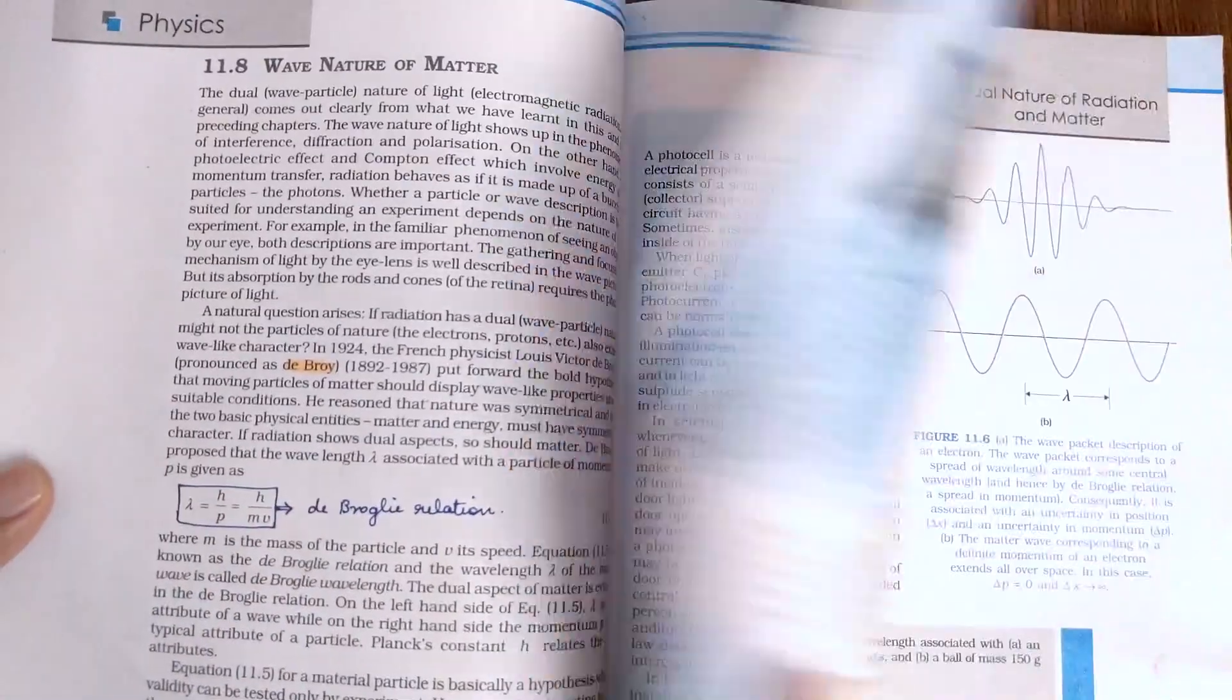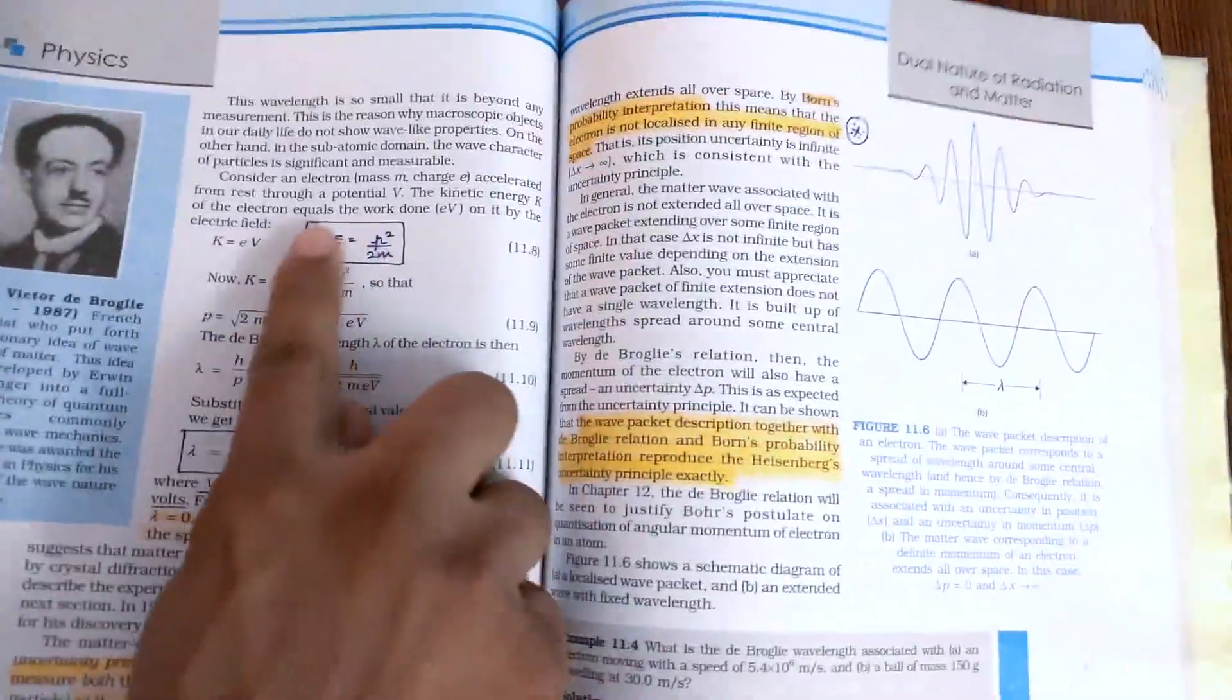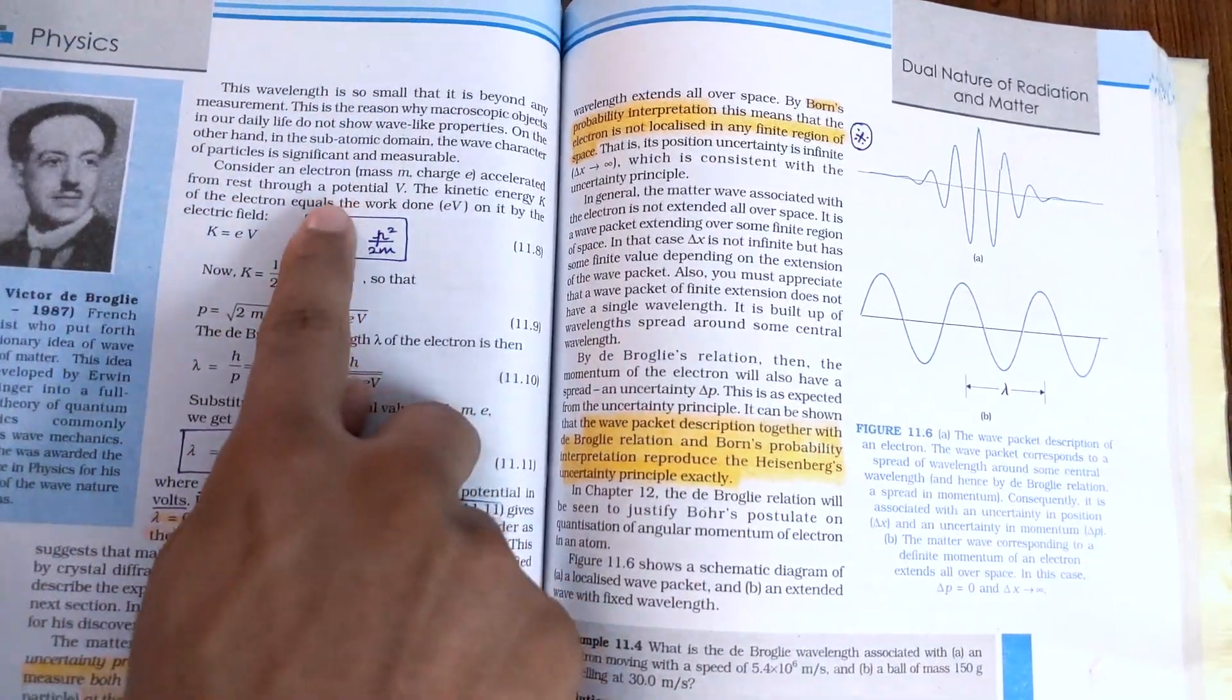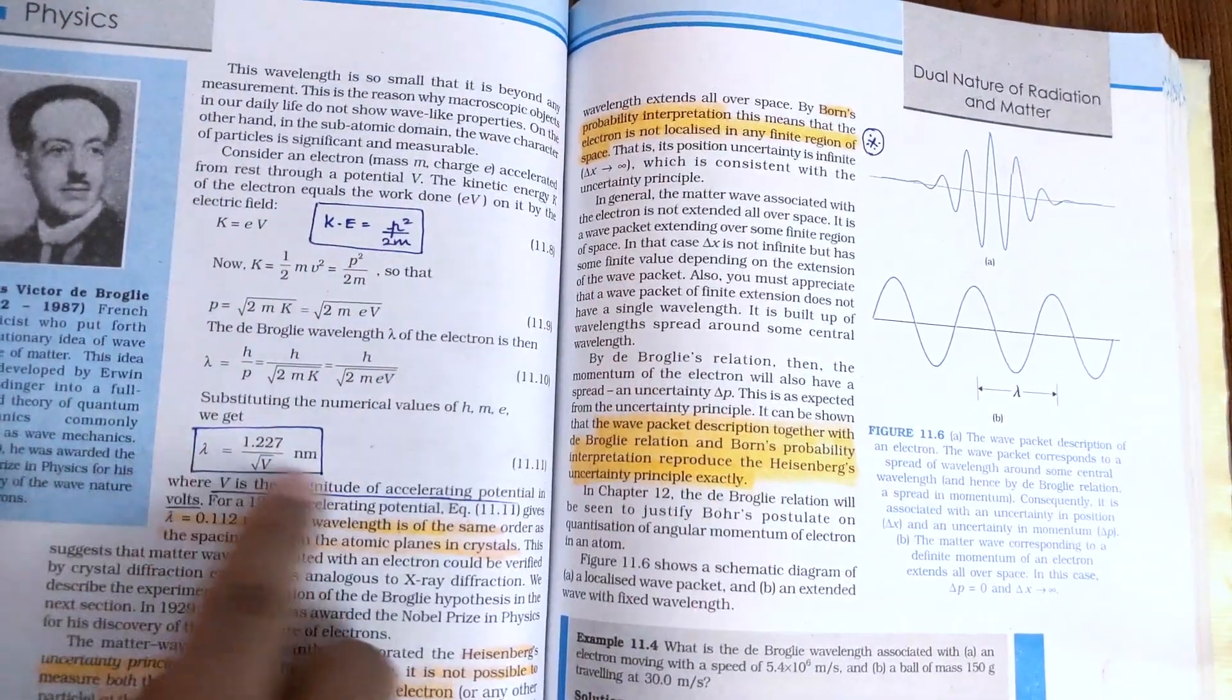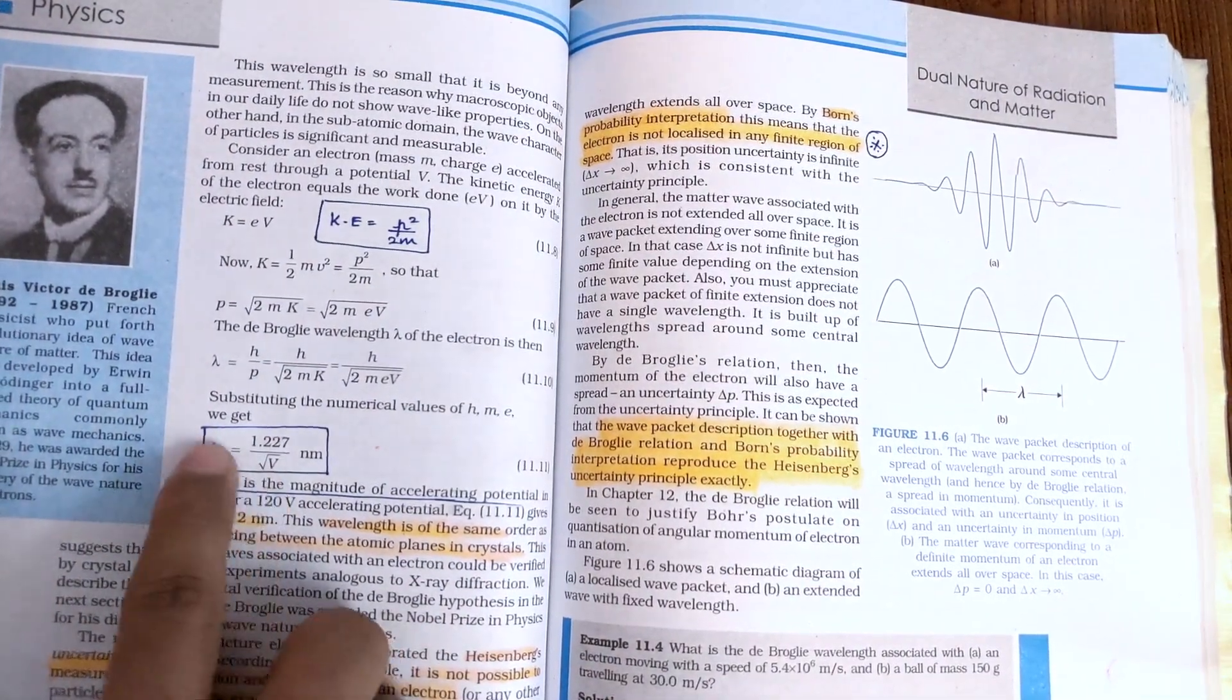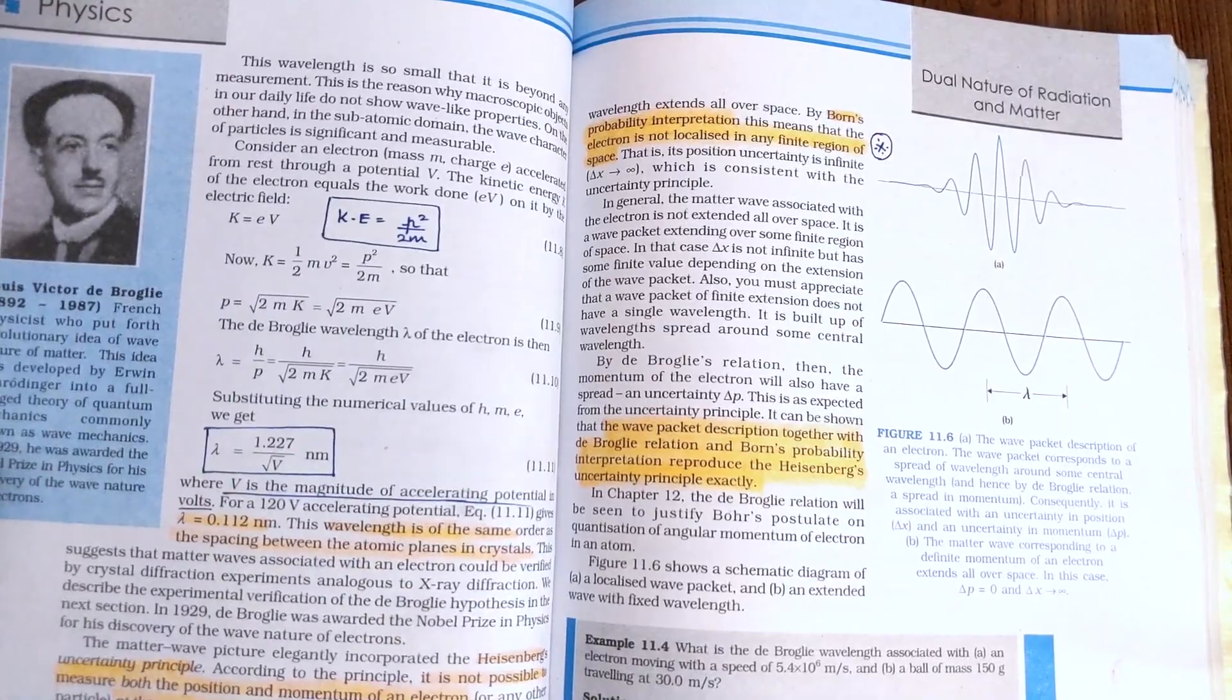One of the examples shown is that when an electron is accelerated from rest through a potential V, its wavelength is this. Of course, this particular equation, when V is 1, gives 1.23 nanometers.